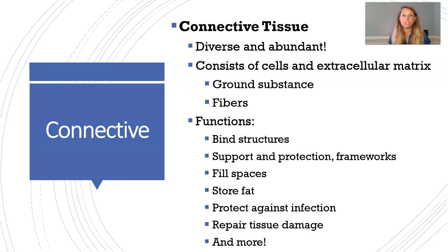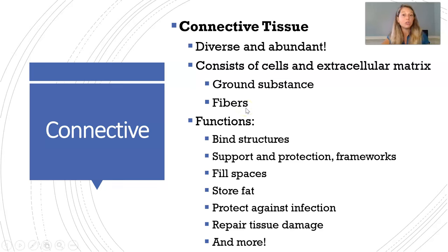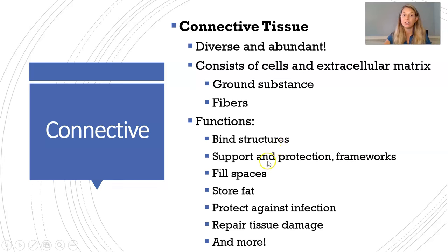Then we have our big kahuna: connective tissue. Connective tissue is very diverse and is the most abundant tissue type in your body. It's really more about the stuff outside the cells — the extracellular matrix — than the cells themselves. Outside the cells we have ground substance, which is the liquid nutrients found in connective tissue, and then the fibers, which are unique to each tissue type. If we were to assign one word to connective tissue's function, it would be support. It binds structures, supports, protects, provides frameworks, fills spaces, stores fats, provides insulation, protects against infection, and repairs tissue damage.